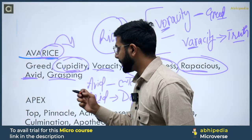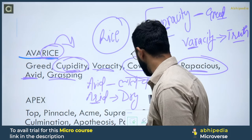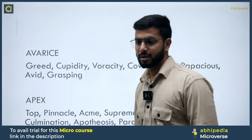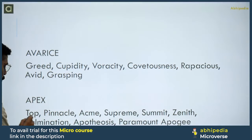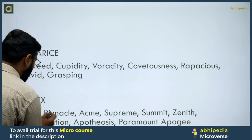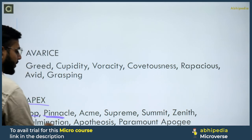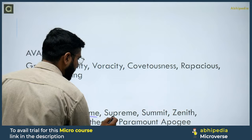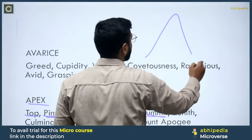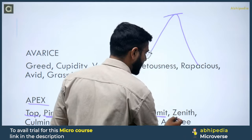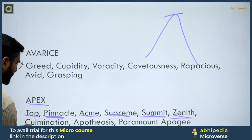The next word is Apex. Apex का मतलब होता है Peak, Summit, चोटी — the Top. Its synonyms include Pinnacle, Supreme (like Supreme Court), Summit (the peak of any mountain), Zenith (meaning Highest Point), and Culmination. Also Apotheosis and Paramount. To remember Paramount, think of Para Trooper or Para Commander.